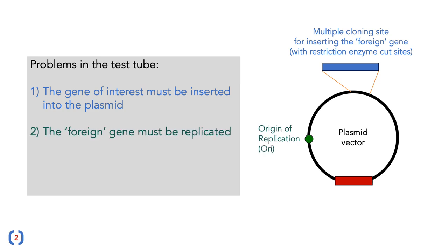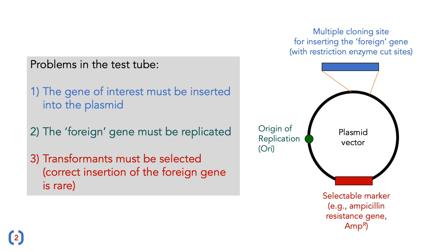The second problem is that the foreign gene has to be replicated. The plasmid vector contains an origin of replication, which is where the polymerase binds to make multiple copies. The third thing we need is that transformants have to be selected — we want plasmids containing the gene of interest and not anything else. We do this using a selectable marker; in this case the example is an ampicillin resistance gene, AmpR, which allows us to select for plasmids containing the gene of interest.